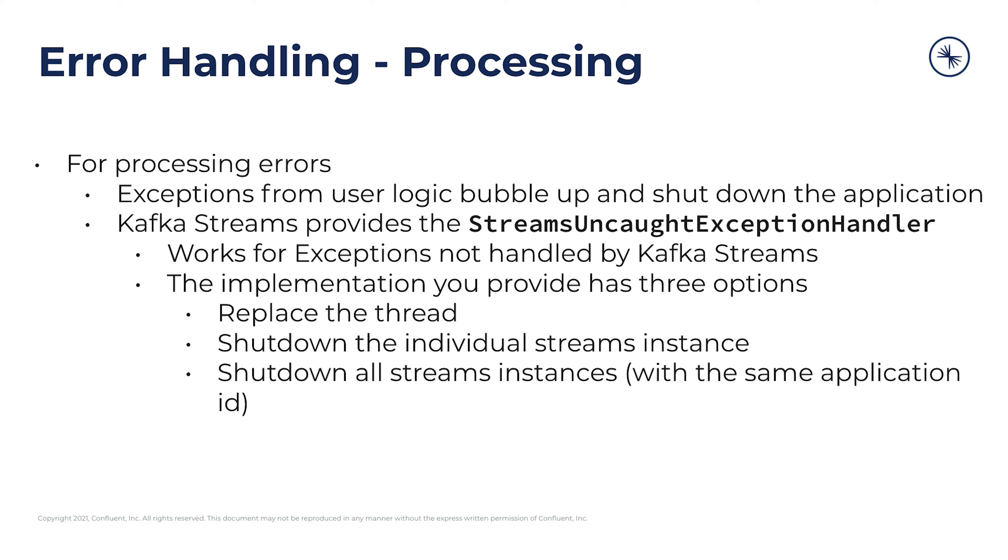You can use it to log anything that you want and then choose what exactly to do. The interface allows you to return one of three options. You can choose to replace the thread, which means that the stream thread which was processing the record that hit this exception would just be replaced and everything would carry on as normal. You can also choose to shut down just that individual streams instance, which means just that process running on that specific node. Or you can shut down the entire streams application — not just the instance on that node, but also any other instance of the same streams application running on any other nodes, where same streams application means running with the same application ID.